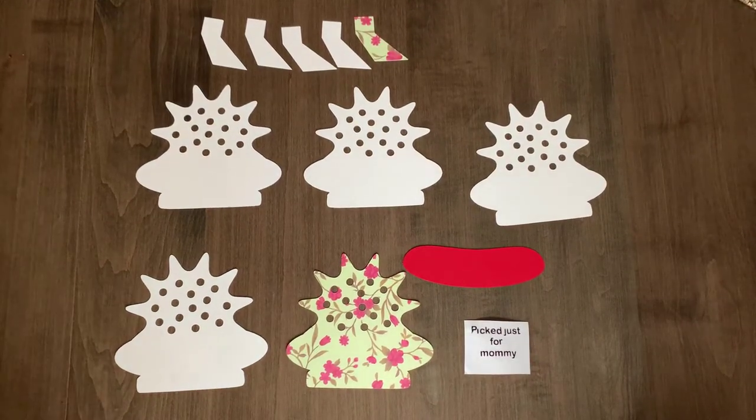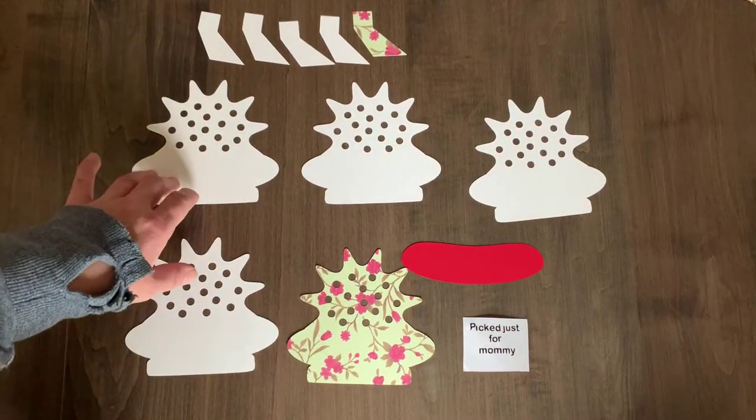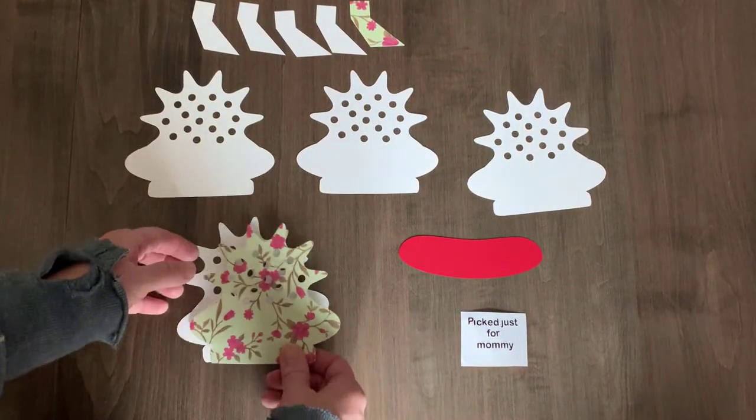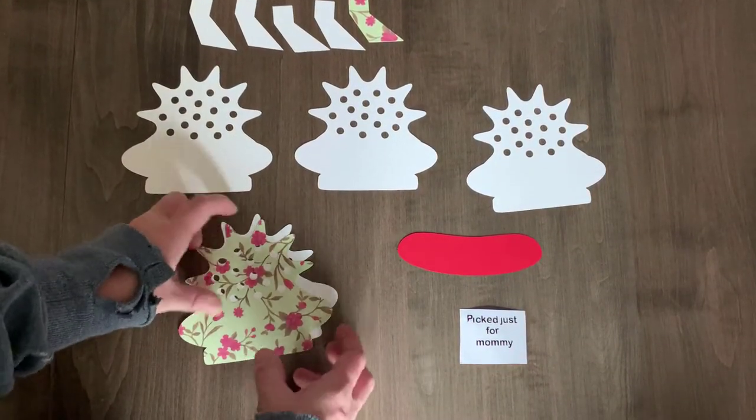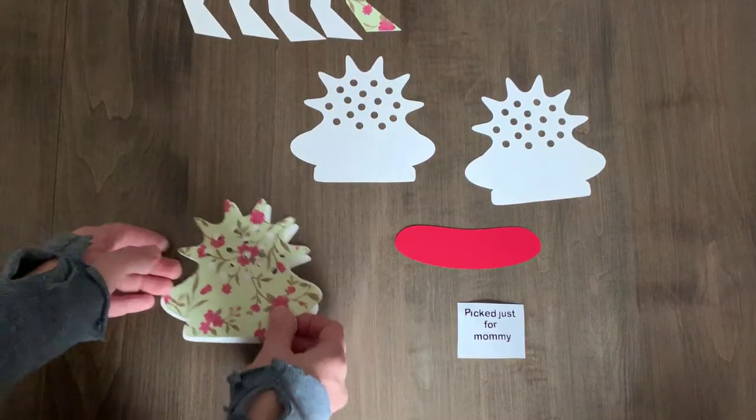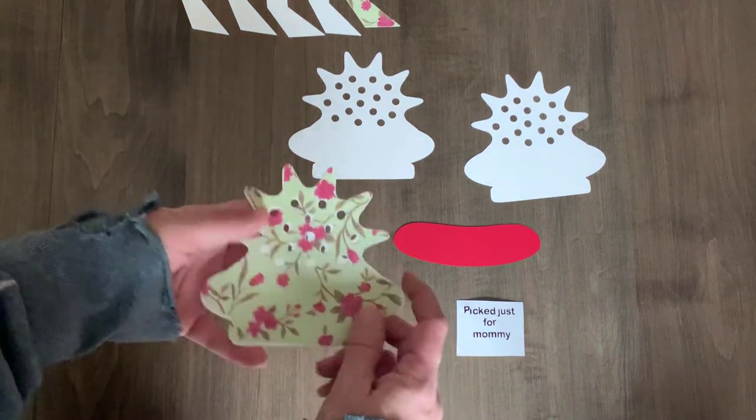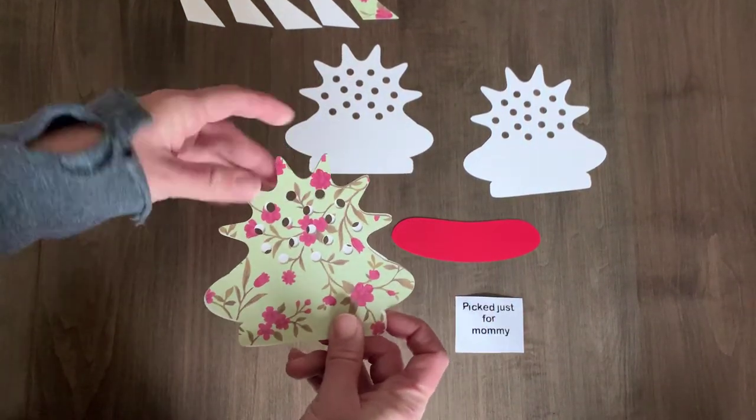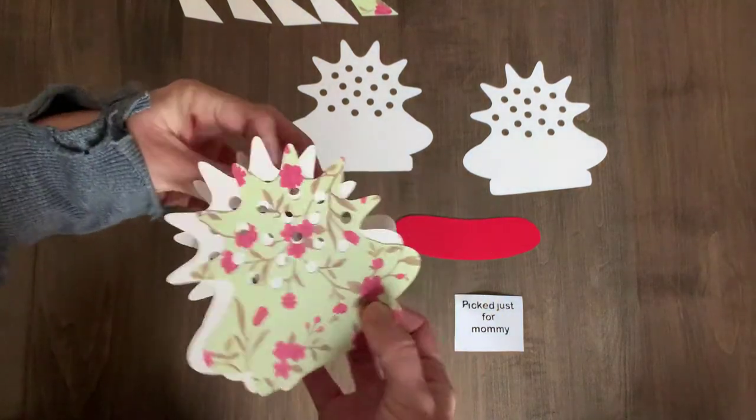These are all of the vase pieces cut out. You'll notice I have five vases. I'm going to glue all of these pieces together but I need to make sure that they're lined up correctly. If they're not, the holes won't match up and you'll notice that the flowers won't go through, so you'll need to make sure that the pieces are lined up so that the holes are all in the same spot.